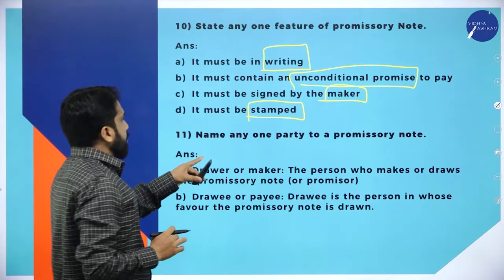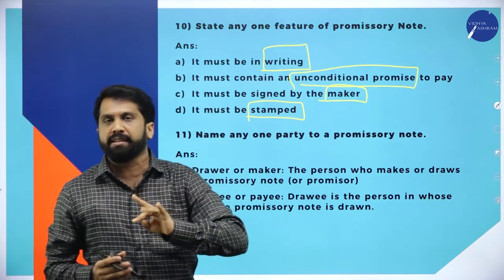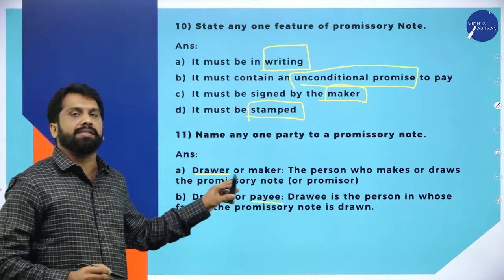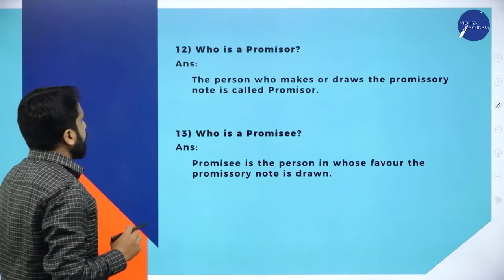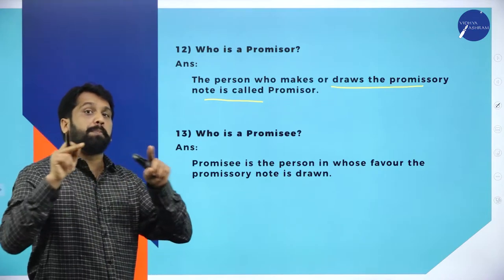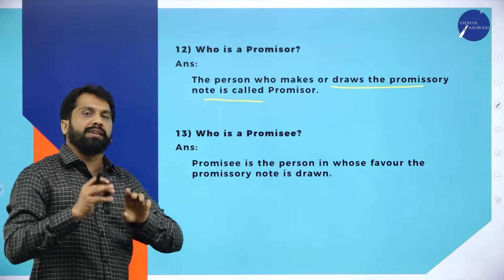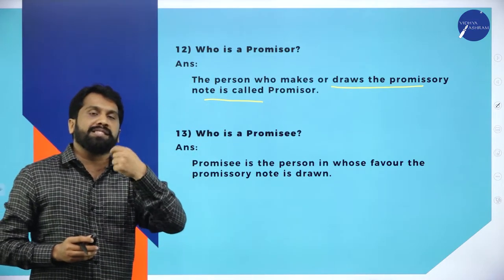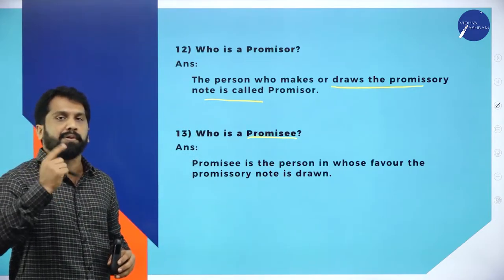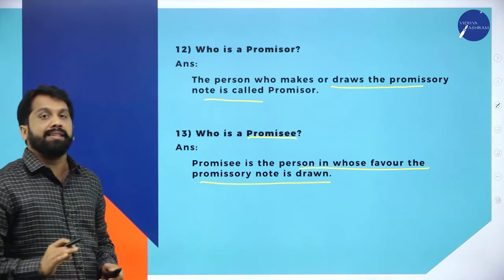Now, name any one party to the promissory note. In bills of exchange, we had drawer, drawee, and payee. In promissory note, we have drawer as well as drawee or payee. The person who makes or draws the promissory note is called the promissor. The buyer will prepare the document — so the buyer is the promissor, promising to pay. In whose favor the promissory note is drawn, that person is the promissee.